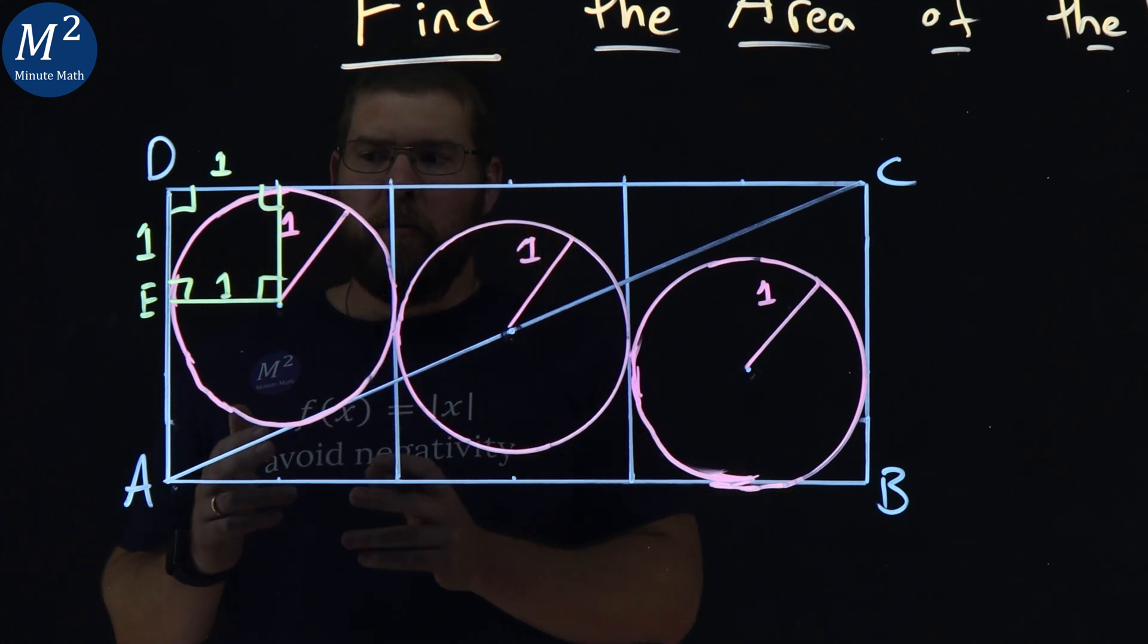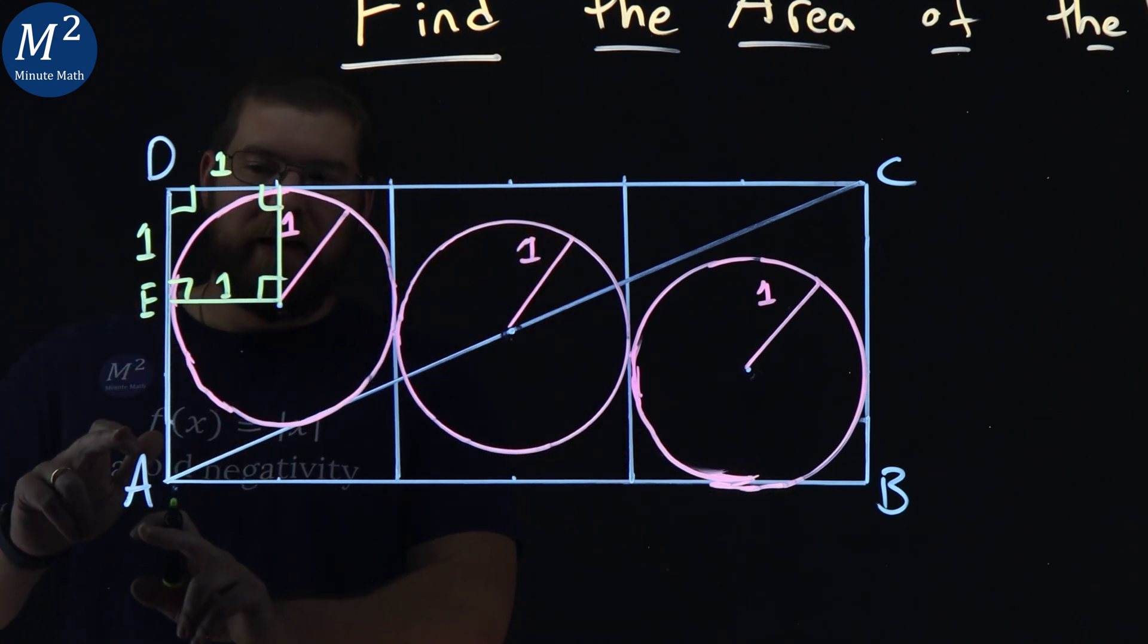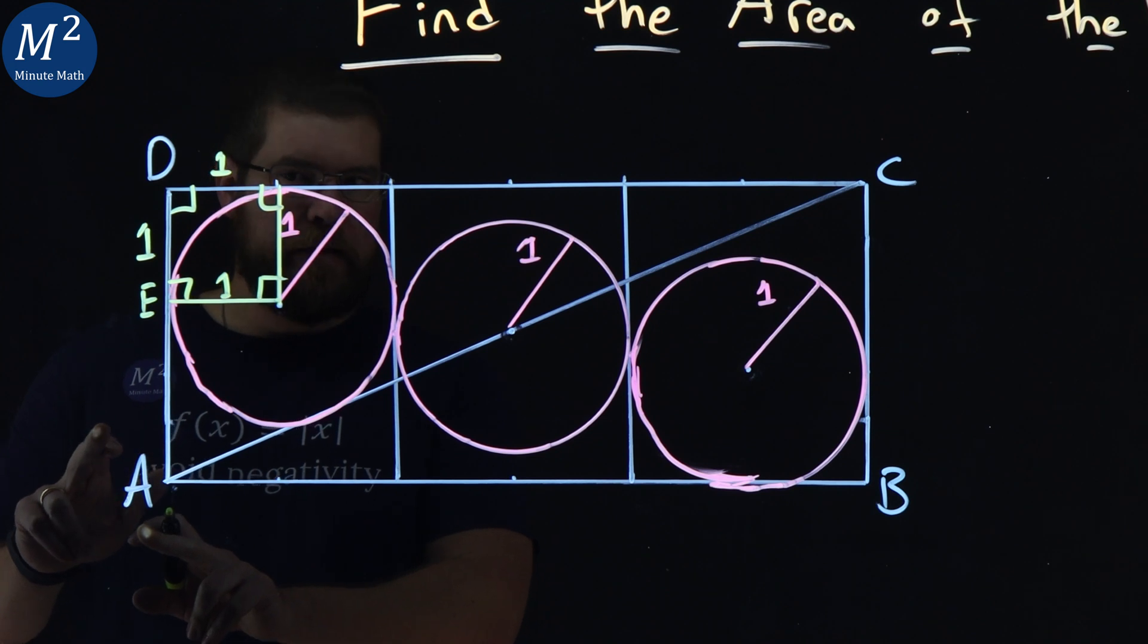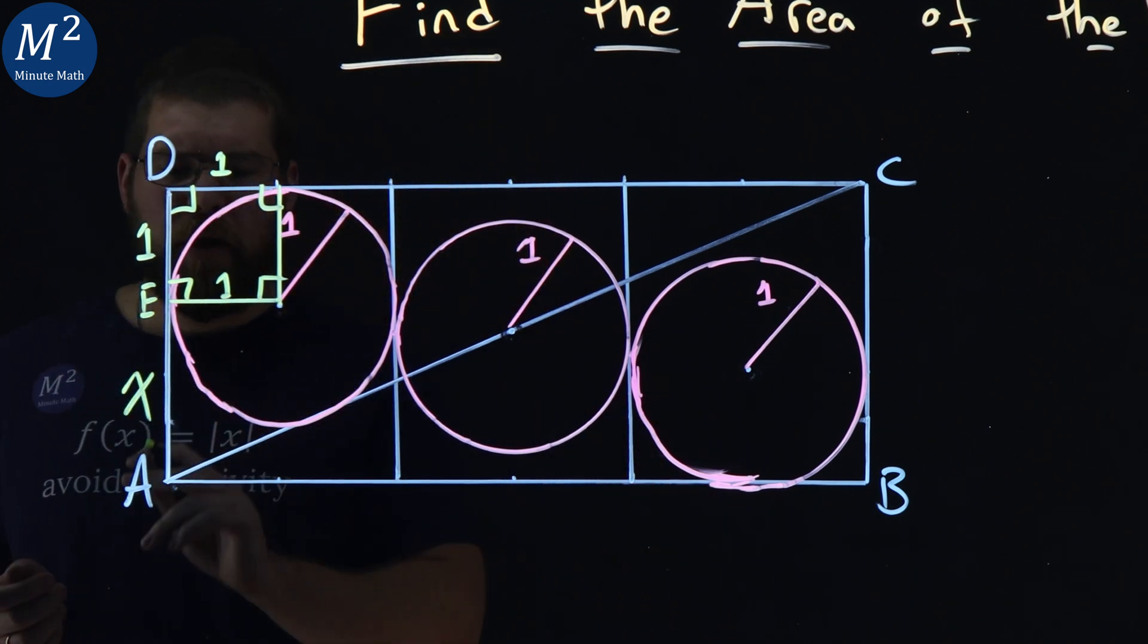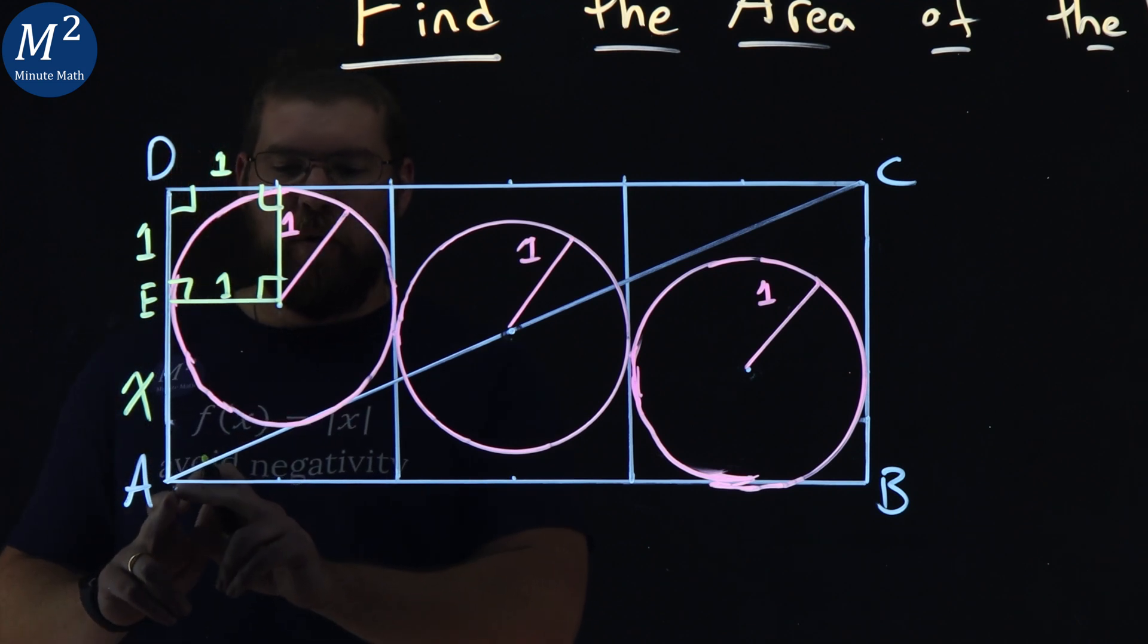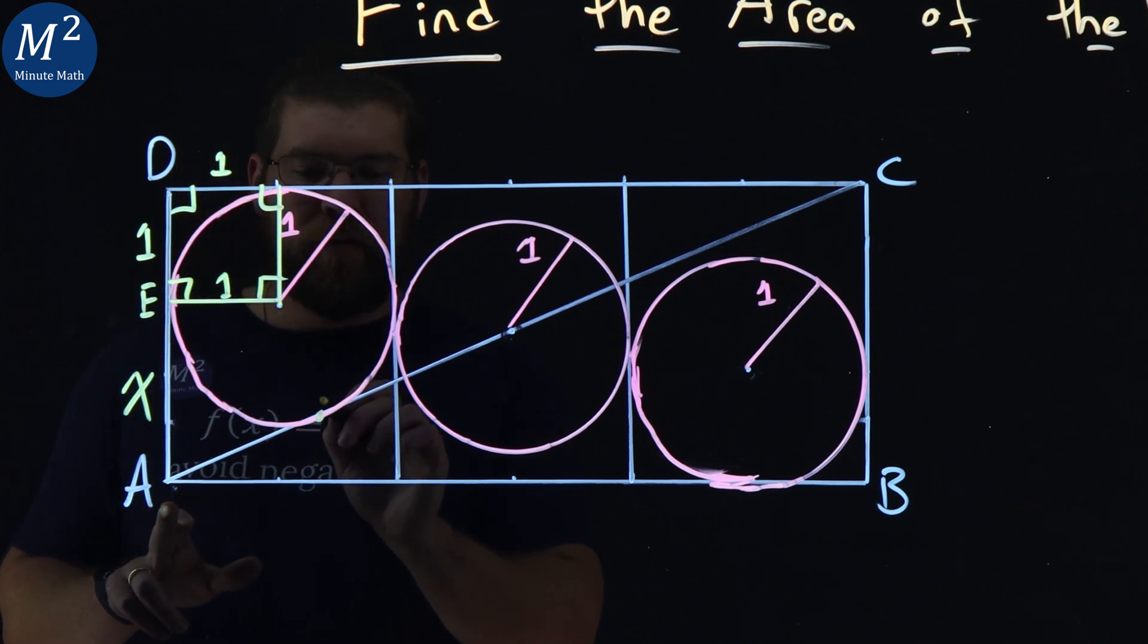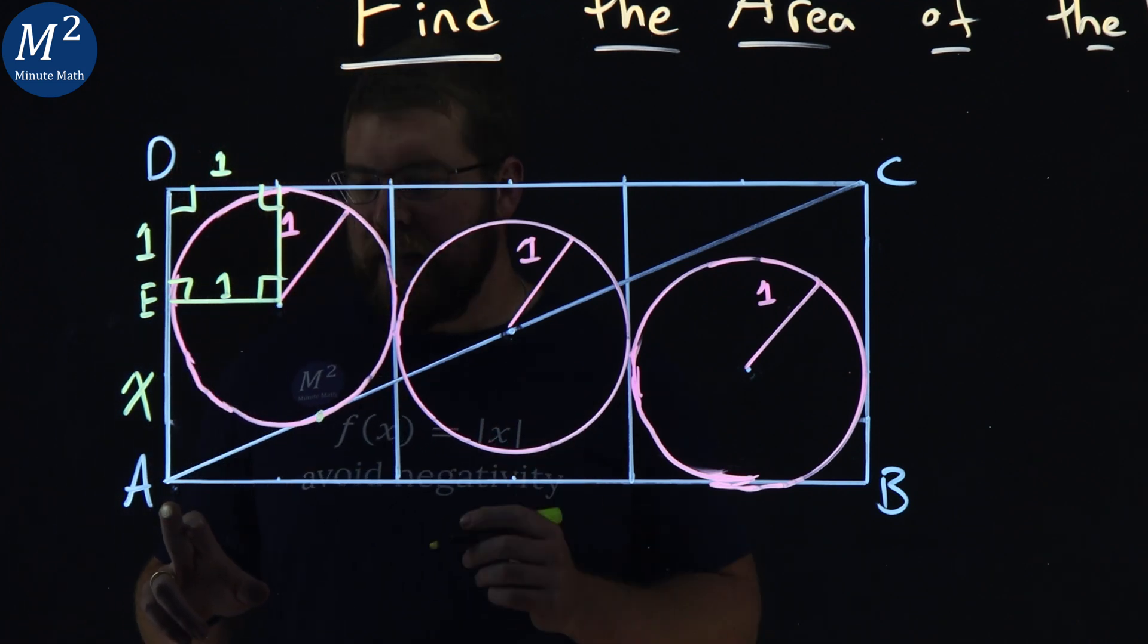Now with that information, what happens here? We need to find what the length of EA is. We don't know what that is. Let's call it X. Well, if EA equals X, what about A to this point right here?